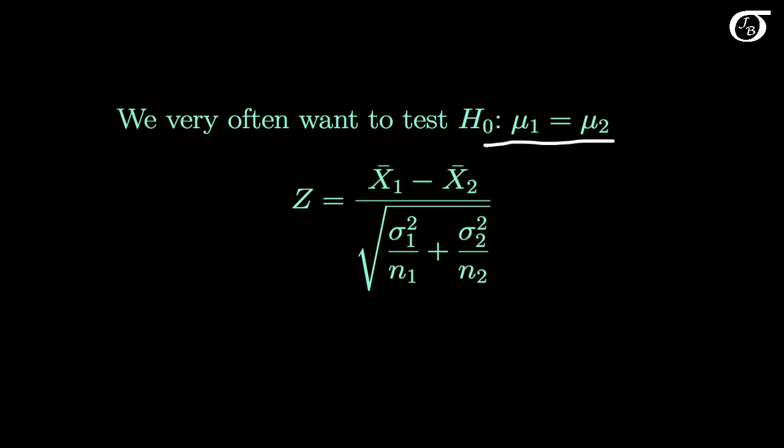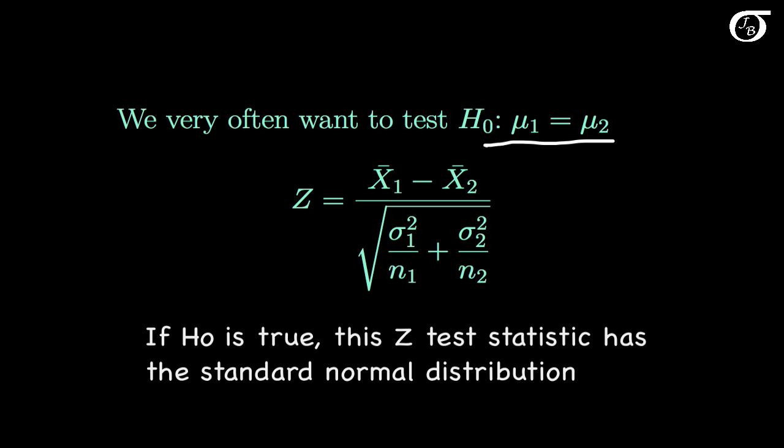Under the conditions described in this video, this would be the appropriate test statistic. And if the null hypothesis is true, this test statistic would have a standard normal distribution. We would use this test statistic, get a p-value, and reach a conclusion in the usual ways.